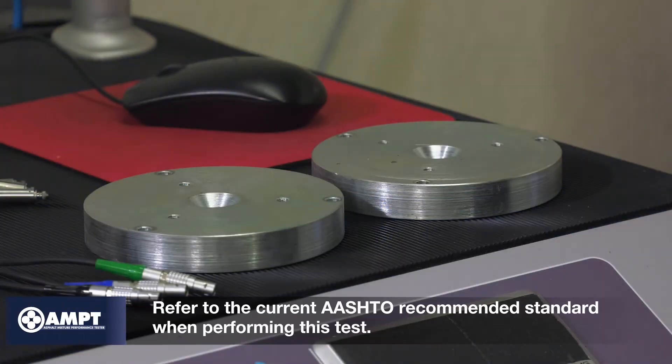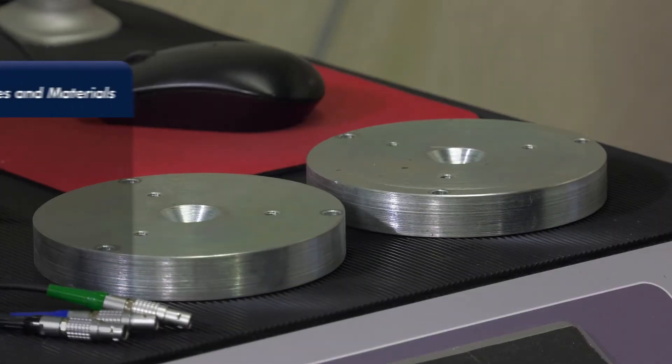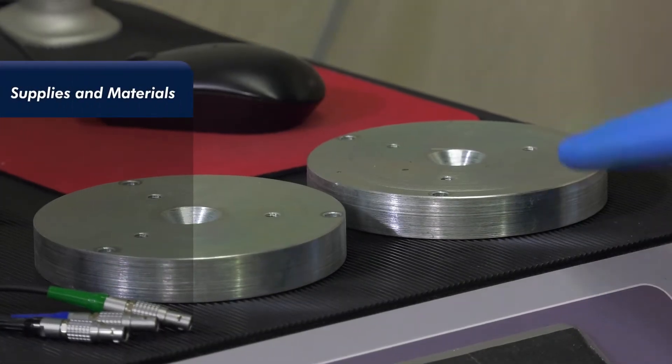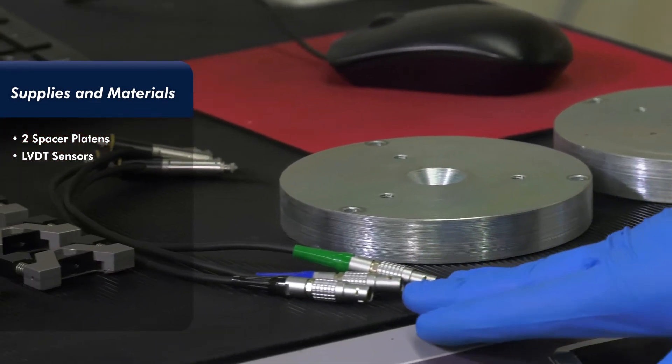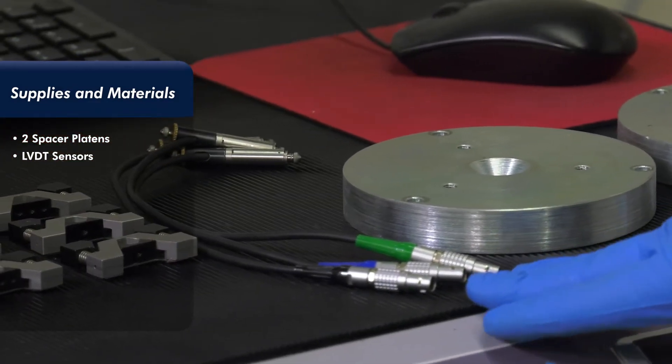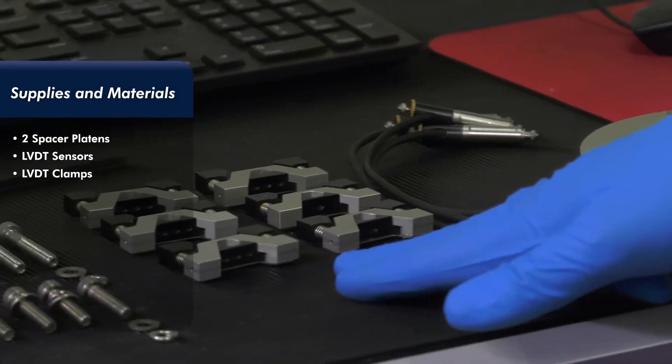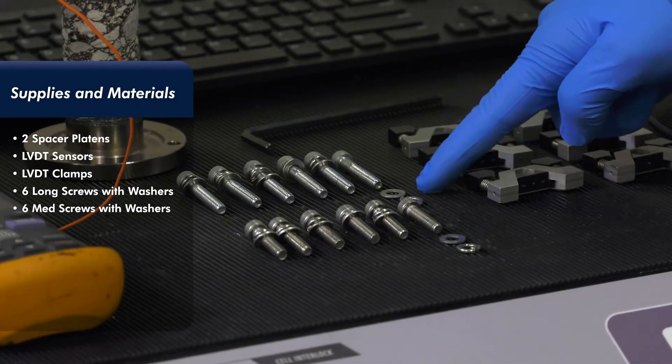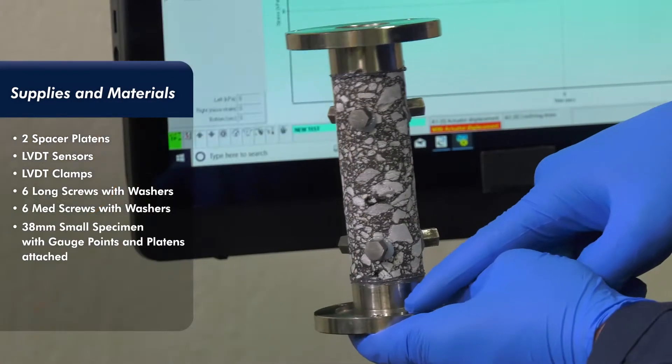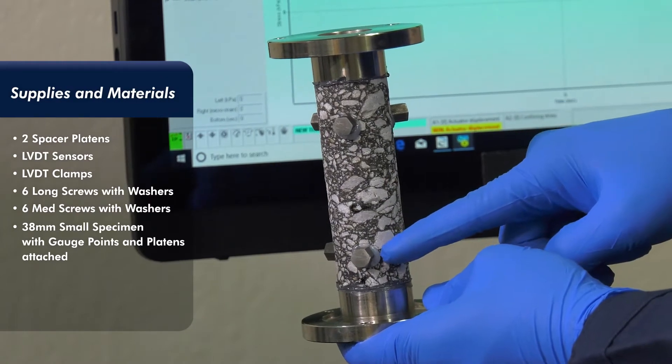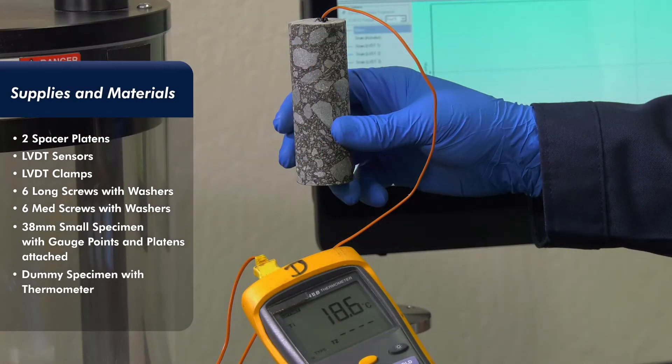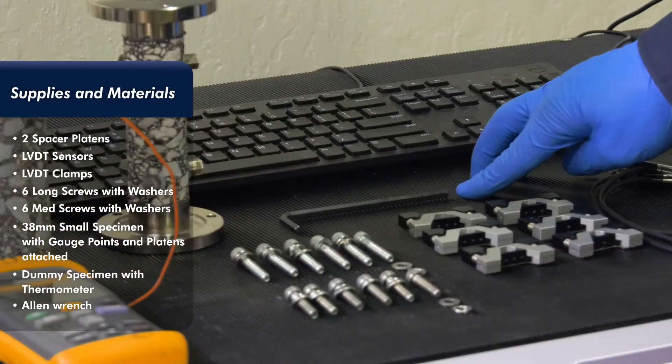Throughout the cyclic fatigue small-scale specimen test, refer to the current AASHTO recommended standard. Supplies and materials for the test are shown here and include two spacer platens, LVDT sensors, LVDT clamps, screws with washers, 38 mm diameter small-scale specimen with gauge points and platens attached, dummy specimen with thermocouple thermal probe installed in the middle of the test specimen, hexagonal or Allen wrench, and metal shims.